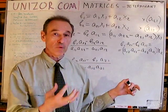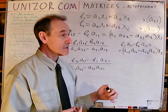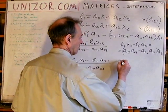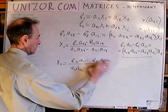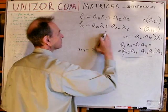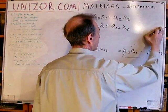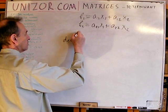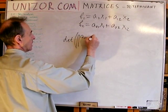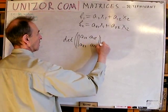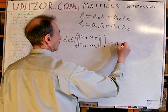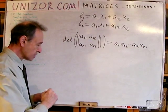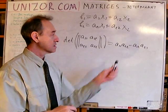This determines the quality of the transformation itself — the quality of the matrix — and that's why it's called the determinant. By definition, the determinant of the matrix [a11, a12; a21, a22] equals a11·a22 minus a12·a21. This expression for a 2x2 matrix is called the determinant.